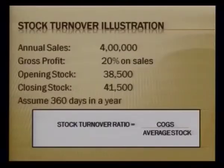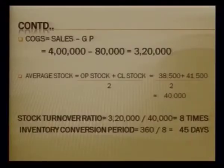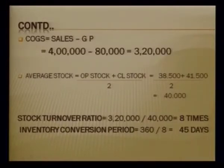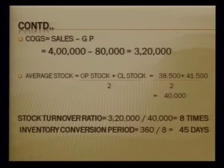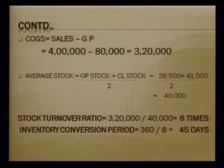Proceeding with the illustration: cost of goods sold equals four lakh minus eighty thousand gross profit, giving us three lakh twenty thousand. Average stock equals opening stock thirty-eight thousand five hundred plus closing stock forty-one thousand five hundred, divided by two, giving forty thousand. So stock turnover ratio is three lakh twenty thousand divided by forty thousand, which equals eight times.